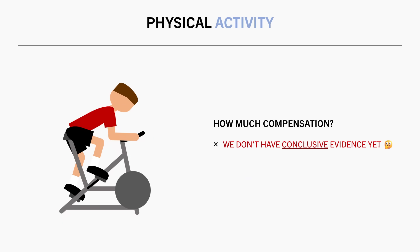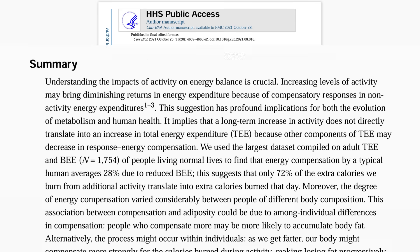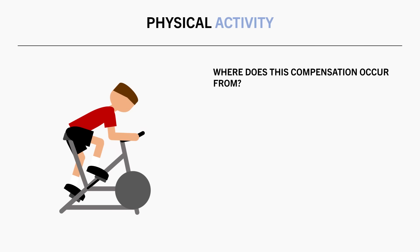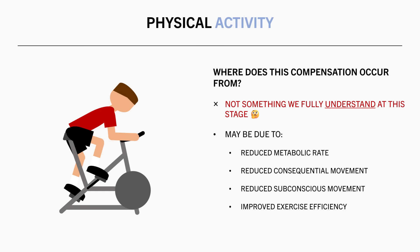But how much compensation do we experience from exercise? This is a good question without a conclusive answer yet, and it is likely moderated by factors like the amount of exercise performed, familiarity to the exercise modality, our body fat levels, and our current energy balance state. However, this paper estimated that on average we tend to observe about a 28% compensation from exercise — meaning total daily energy expenditure will only increase by about 72% of the energy burned via exercise. Hypotheses to explain this compensation include a reduction in basal metabolic rate, reduced NEAT levels, a decrease in subconscious movements like fidgeting, and improved exercise efficiency — though it may be a combination of multiple variables.